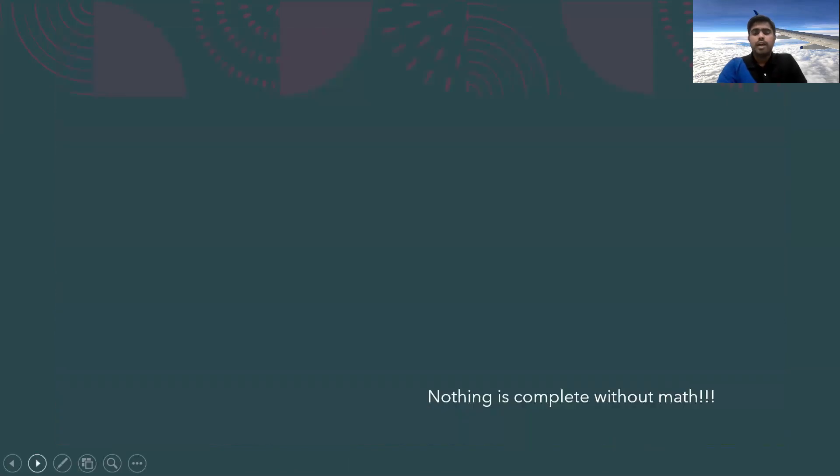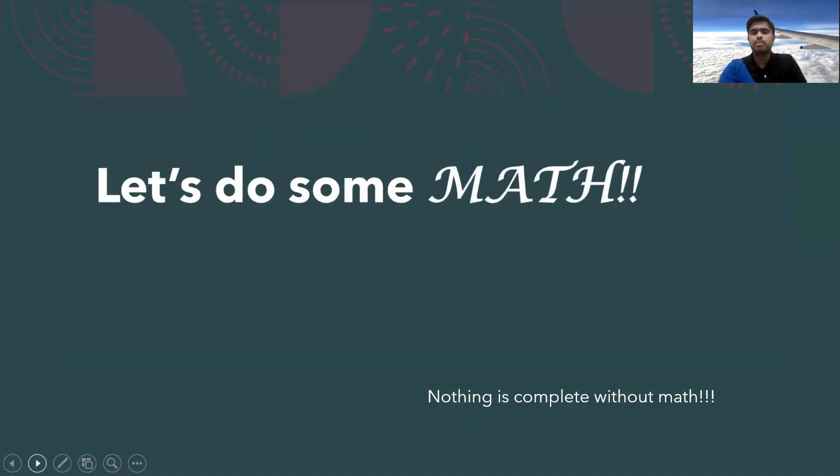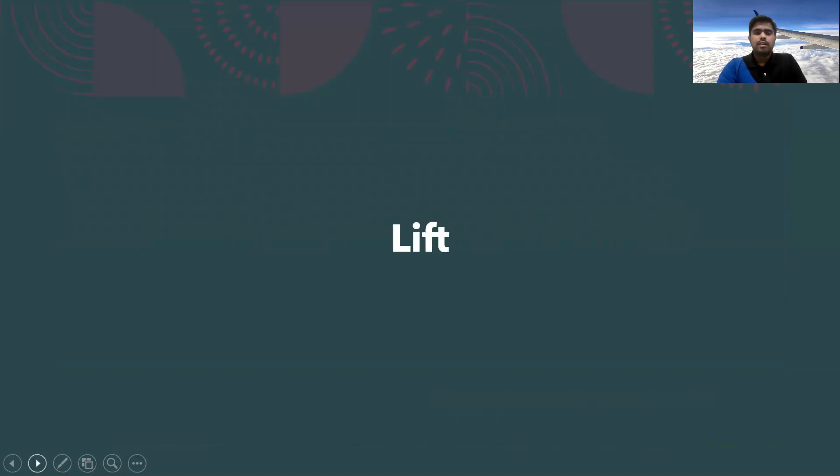As you all know, nothing is complete without math. So let us try to understand it mathematically. How do we represent lift mathematically? As we know, Bernoulli's equation states that P plus half rho V square is equal to constant. Though it was stated for pressure variation in case of water motion, but as even the air is fluid, we can consider it in this case as well.